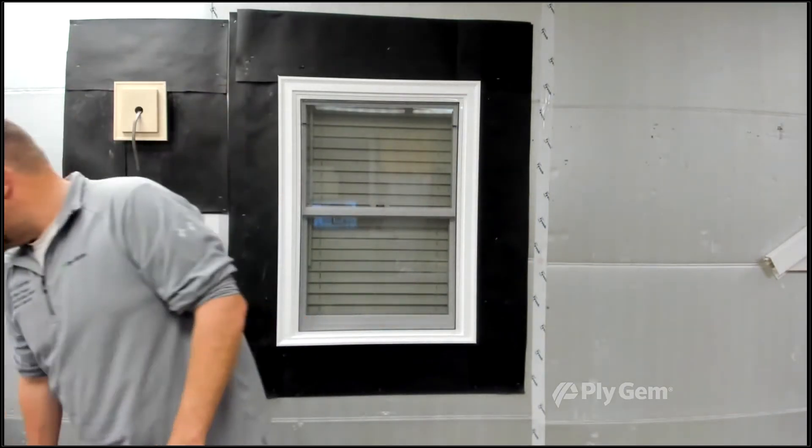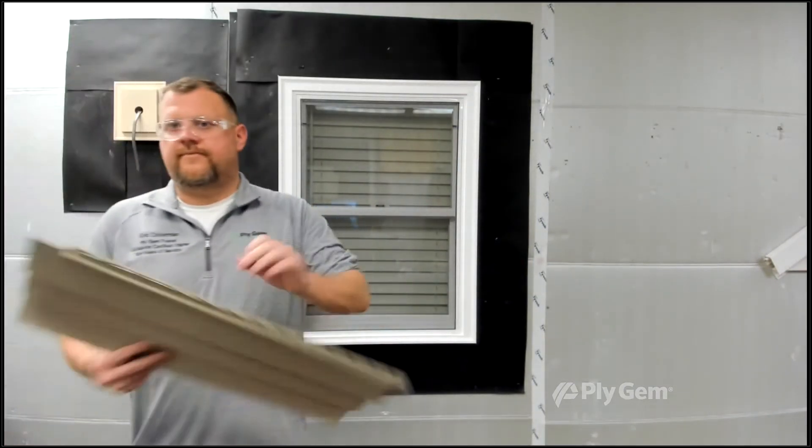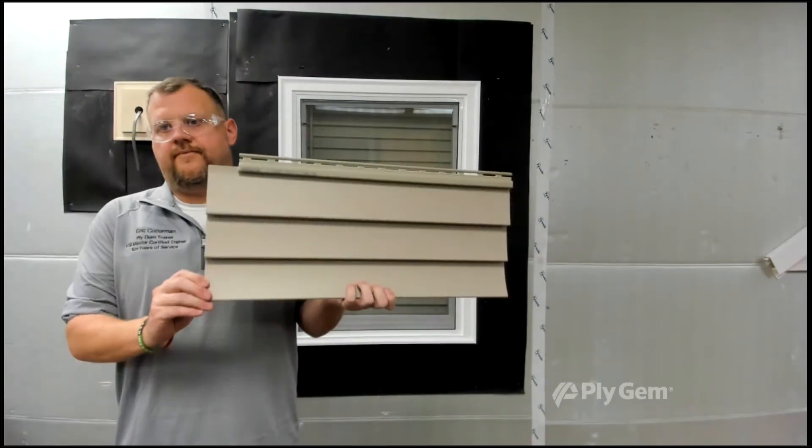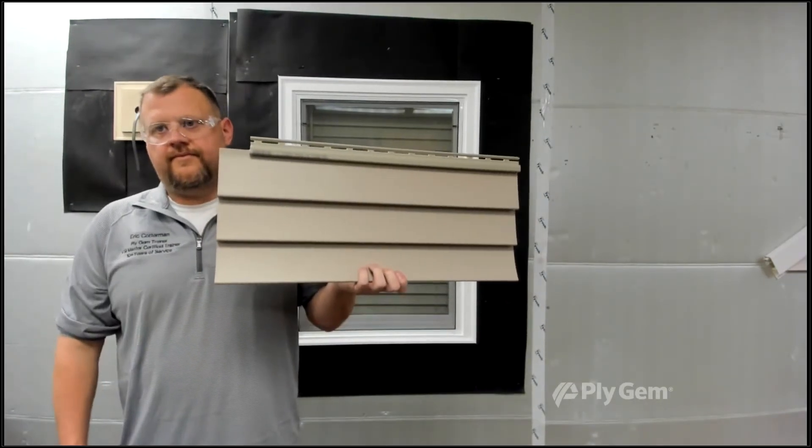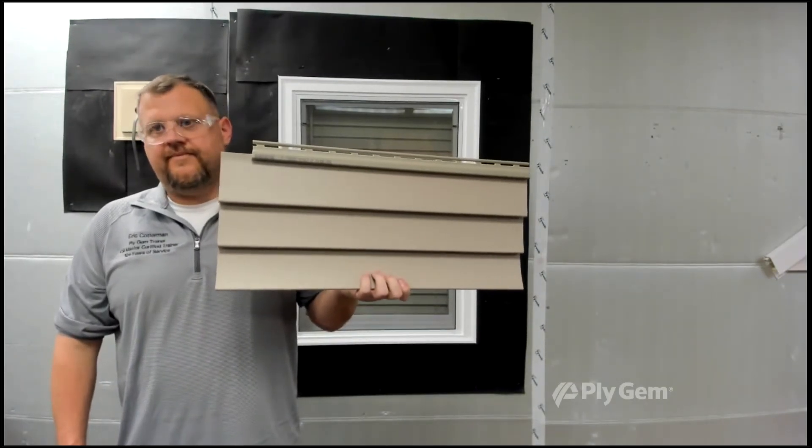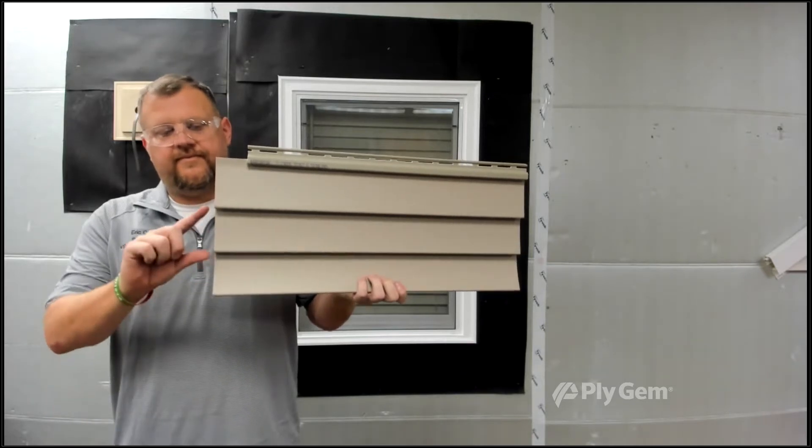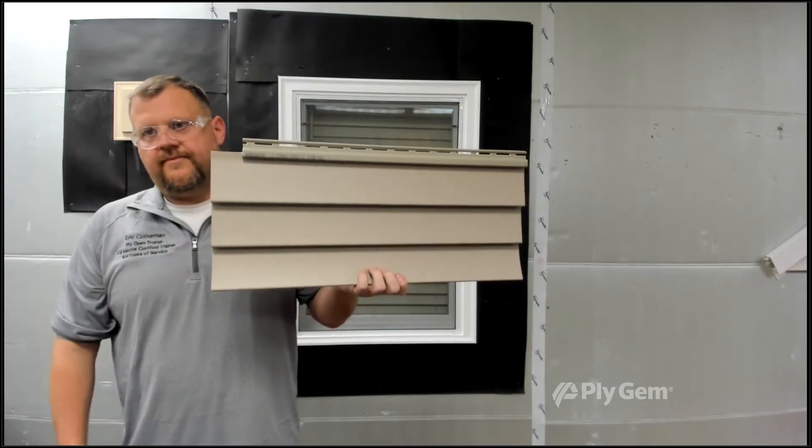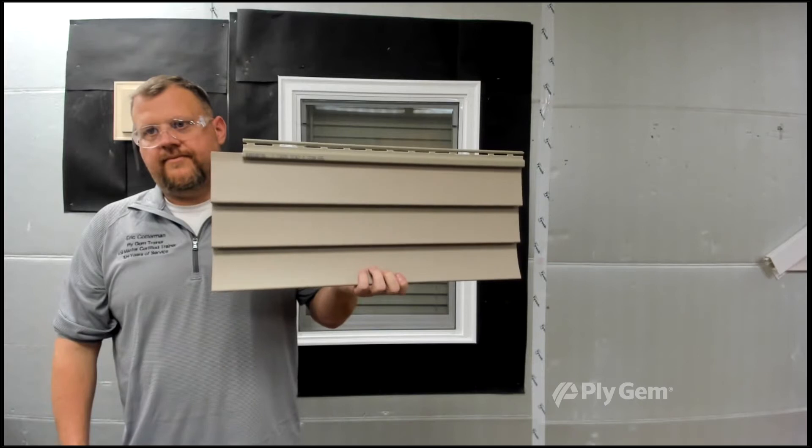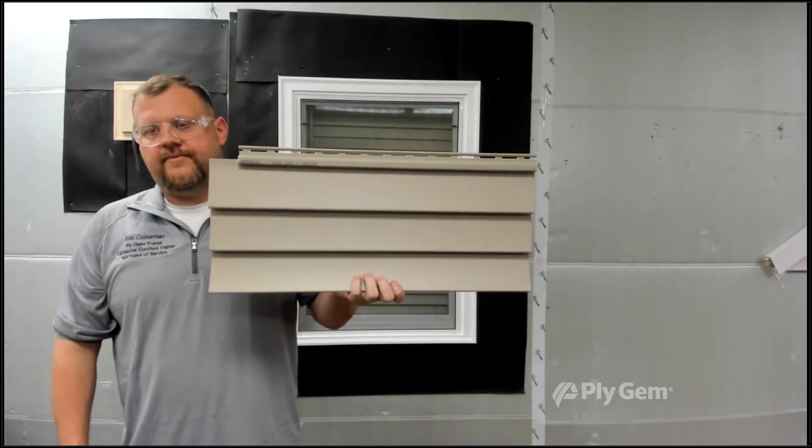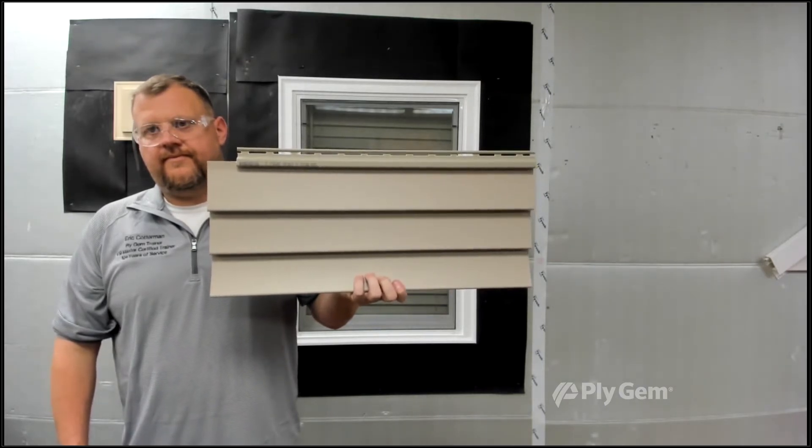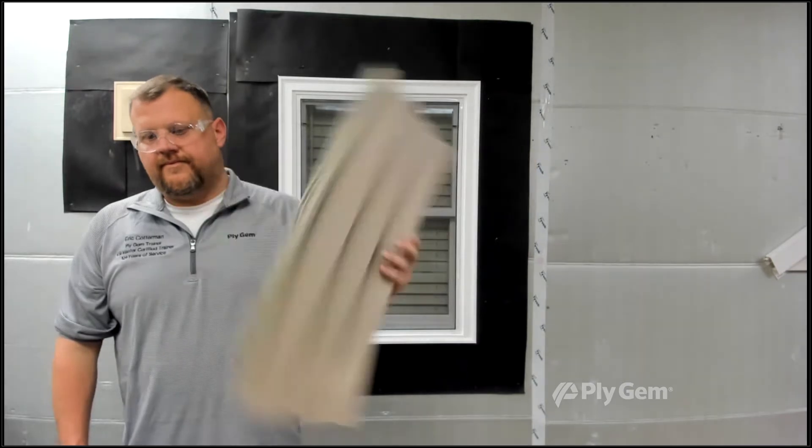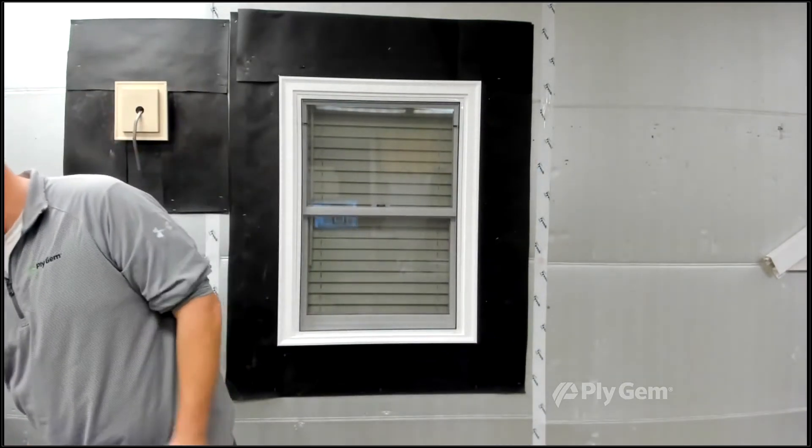Now the last horizontal siding we want to show you in the triple is a triple three. It's very common for smaller homes. Again, each piece is three inches and you get three of them in each panel. The different profiles are just the preference of a homeowner. Normally the smaller the profile, usually the smaller the surface of the wall on the house, but not always. There are a lot of different options.